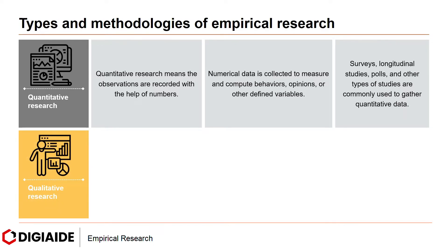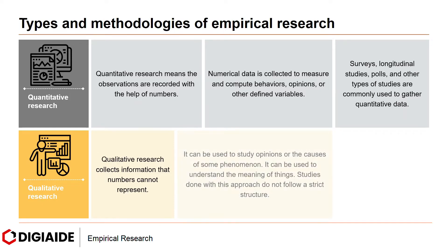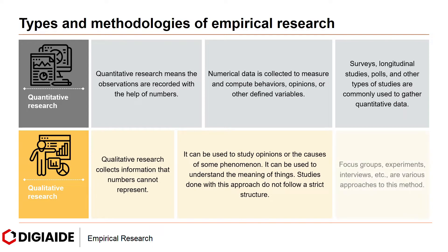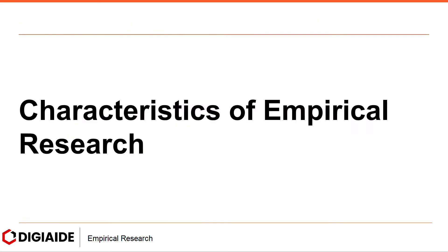Next, qualitative research. Qualitative research collects information that numbers cannot represent. It can be used to study opinions or causes of some phenomenon and to understand the meaning of things. Studies done with this approach do not follow a strict structure. Focus groups, experiments, interviews, etc. are various approaches to this method.